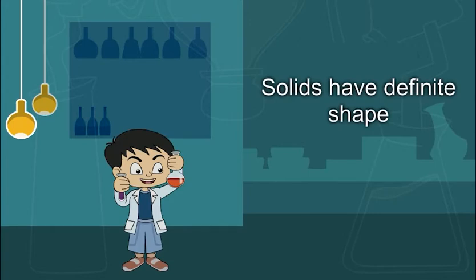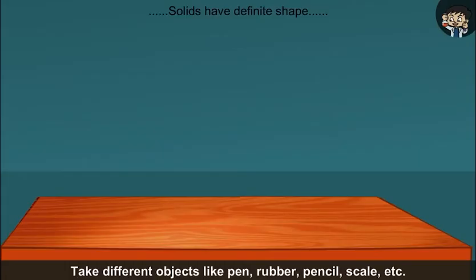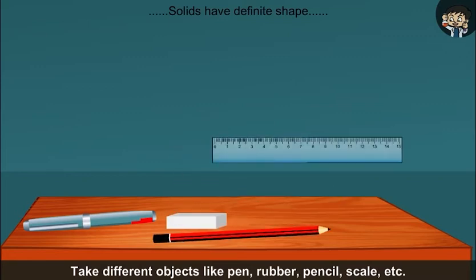Solids have definite shape. Take different objects like pen, rubber, pencil, scale, etc.